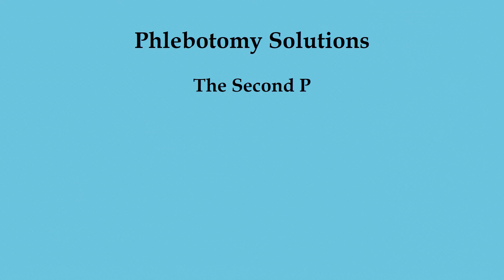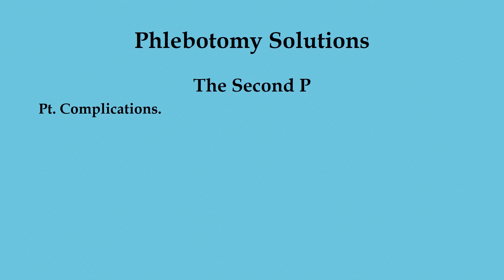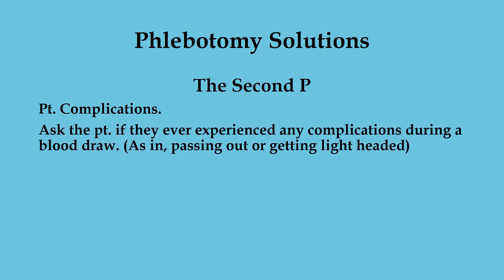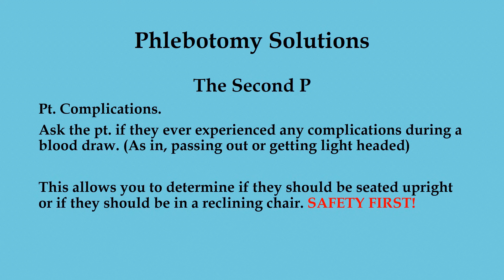The next two Ps — second and third — are ones rarely if ever asked to a patient. The second P is patient complications. Ask the patient if they've ever experienced any complications during a blood draw, such as passing out or getting light-headed. This allows you to determine if they should be seated upright or placed in a reclining chair. Safety is the first concern.